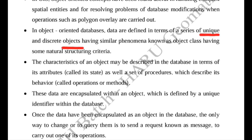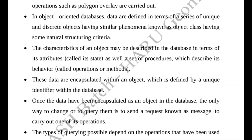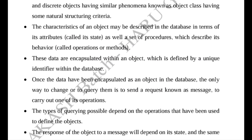These unique objects store information about their attributes or characteristics in the same phase as their spatial data. The characteristics of an object may be described in the database in terms of attributes, which are known as the state. The set of procedures or behavior is known as operations or methods.